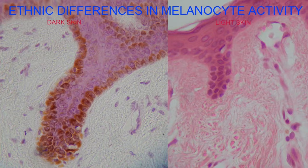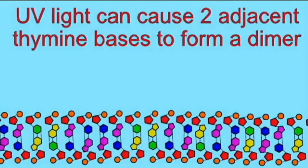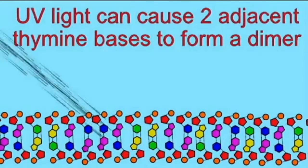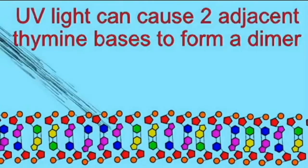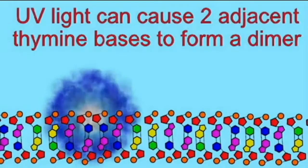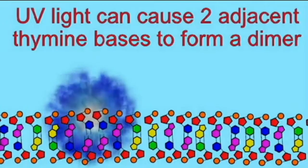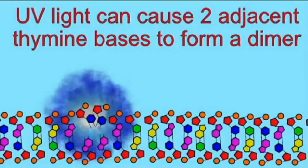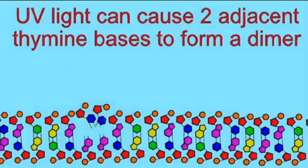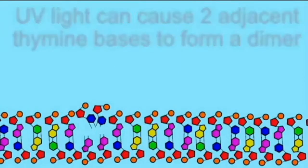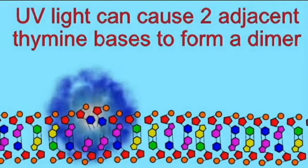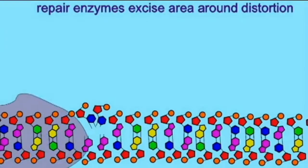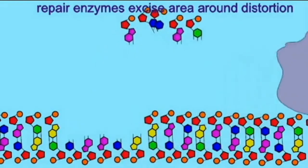First of all, ultraviolet light can cause mutations when it causes neighboring DNA nucleotides known as thymines to adhere to each other. When they stick together, in the next round of cell replication these two nucleotides could be mistaken for one, and therefore when DNA is replicated, a mistake is made. The more mistakes which accumulate, the greater one's risk of cancer.